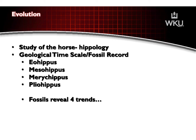From the Eohippus — approximately the size of a fox — to the Merychippus at about 35 inches, similar to a miniature horse, to today's horses at 15, 16, or 17 hands. We measure horses in hands once we move away from miniatures — four inches equals one hand. So you can calculate how many inches is 14, 15, or 16 hands.